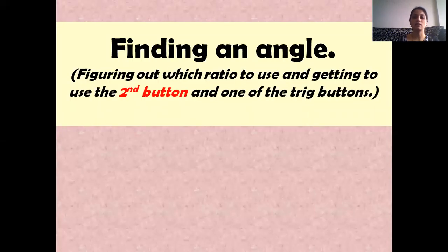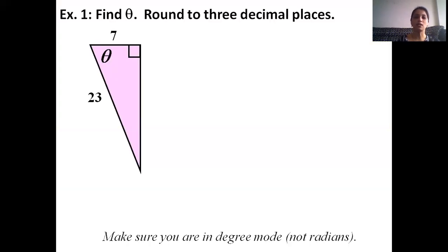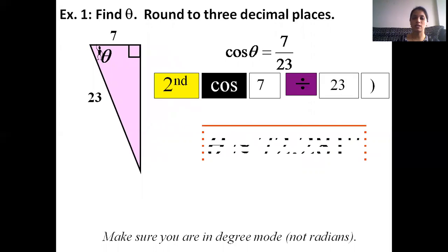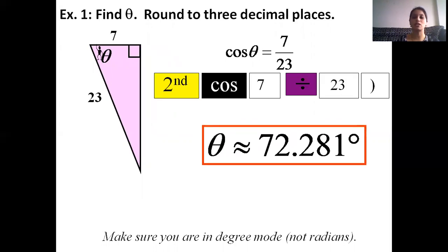Now let's find an angle. Example number one: find theta rounded to 3 decimal places. In this figure, the hypotenuse value is 23 and the adjacent side is 7. Using cos theta equals adjacent over hypotenuse, cos theta equals 7 divided by 23. This implies theta equals cos inverse of 7 divided by 23, so theta equals 72.281 degrees.